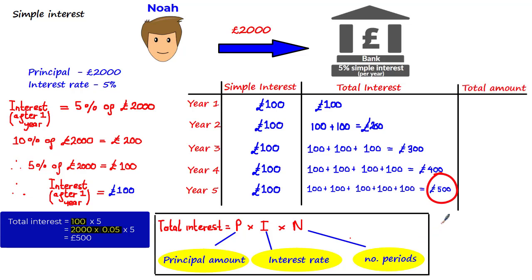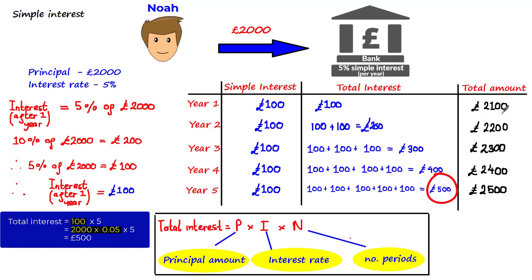You might also be asked to calculate the total amount Noah has after each year. This is straightforward — all you need to do is add the principal amount (£2,000) to the total interest made after that year. So after year 1, the total amount is £2,100. After year 2, the total amount is £2,200, which comes from adding £2,000 to £200, and so on.